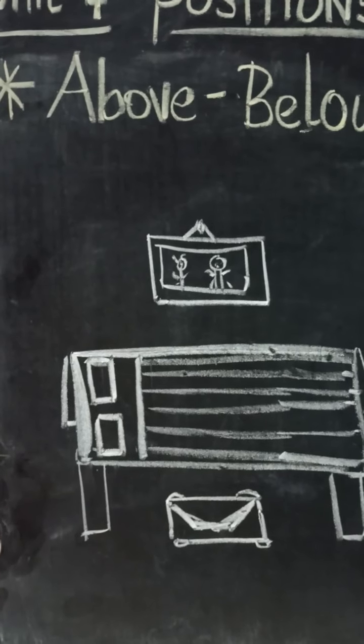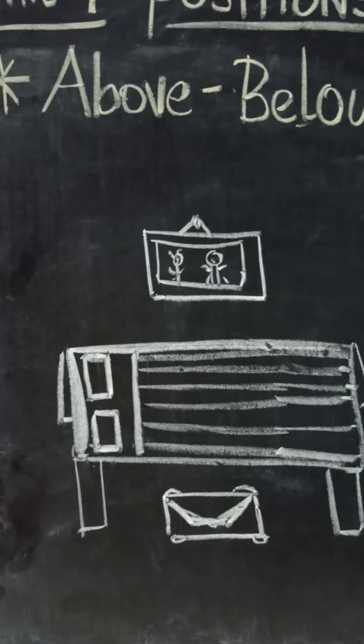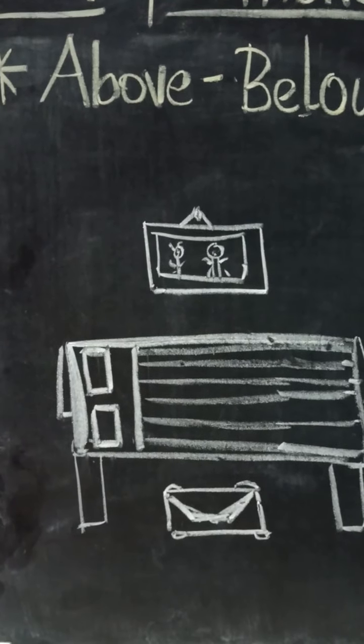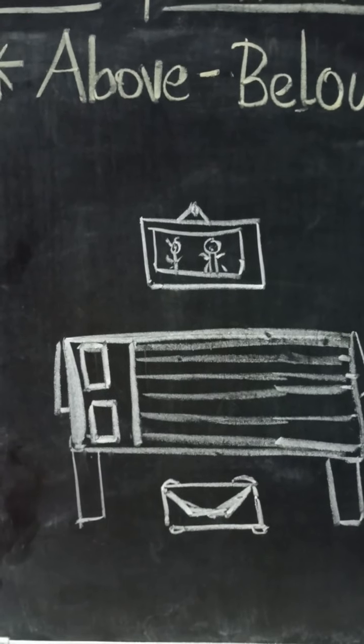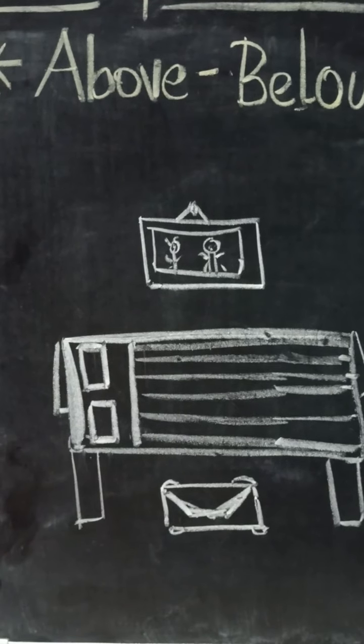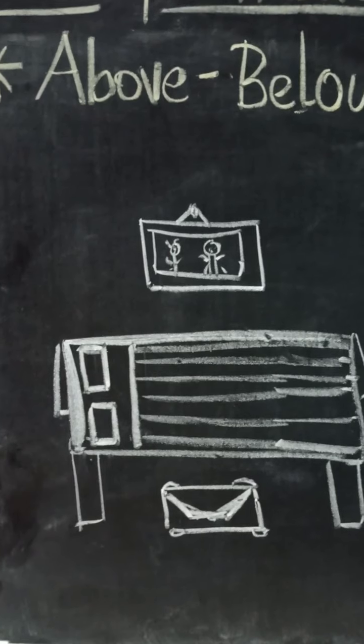And there is a suitcase below the bed. So above means on top, below means at the bottom. As I said to you, it is similar to under.